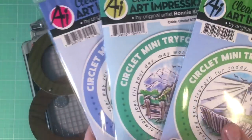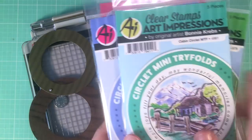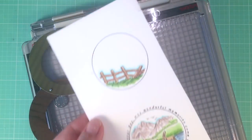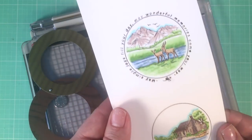So I'm going to show you today our cabin circlet mini tri-fold. I already went ahead and stamped these and colored them up so they were all ready for you.